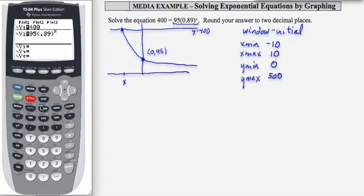I'm going to go now to my window and reflect the initial window values that I chose over on the right-hand side of the screen. So for y min, I'm going to choose 0, and for y max, I'm going to choose 500. Now I'm going to press graph.